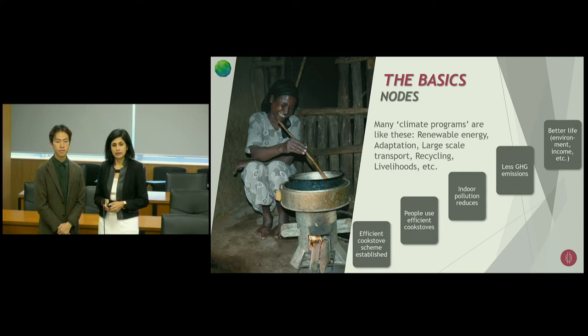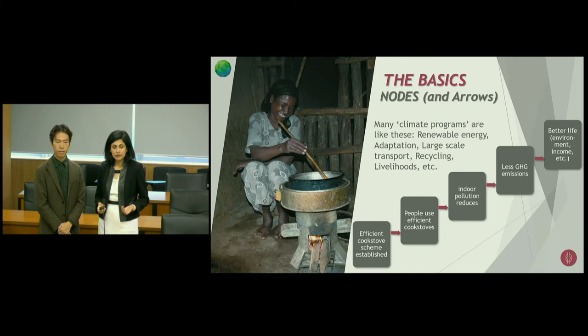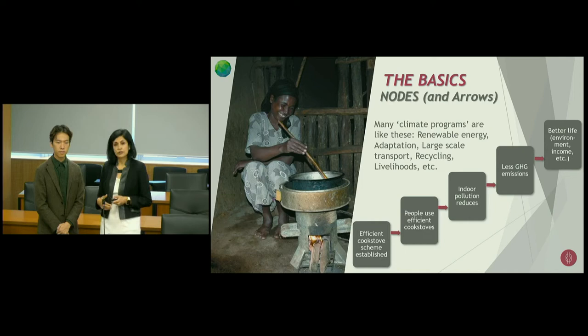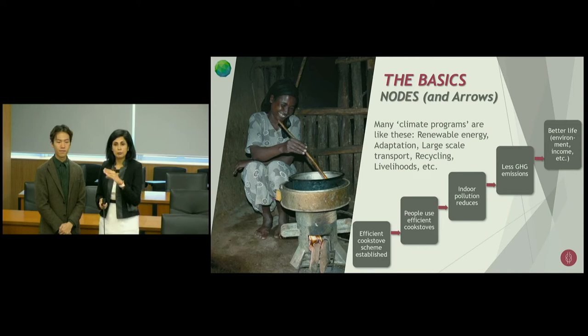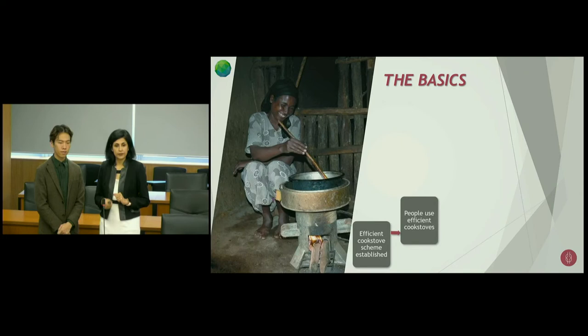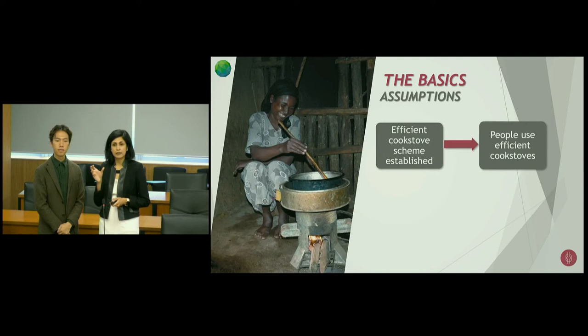They basically run like this. There is a program — in this case, we're using the example of an efficient cook stove program — where a scheme or a program is established. People use these efficient cook stoves, which leads to a reduction in indoor air pollution, which in turn means lesser greenhouse gas emissions and hopefully leads to better life, environment, income, etc. We can already imagine various other relationships that could be forged between each one of these nodes, but the importance of looking at how we build assumptions is key for program people and implementation teams to recognize.